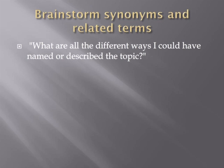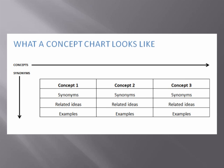Databases can only match strings of characters that you input with strings of characters in their contents. So if you just put in 'fatalities' and some articles use the word 'deaths' instead, you're not going to find those articles. That is why you need to put yourself in the mindset of those authors and think: what are all the different ways I could have named or described the topic? Brainstorm those synonyms and related terms. For fatalities, you have deaths, and maybe also mortality rate, or even lethal incidents — it will depend a lot on the subject area you're researching. To keep track of all those synonyms and related terms, use a concept chart.